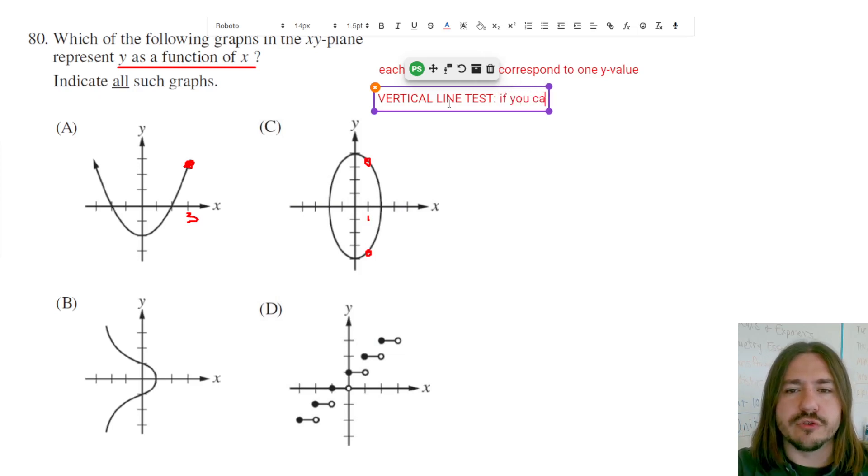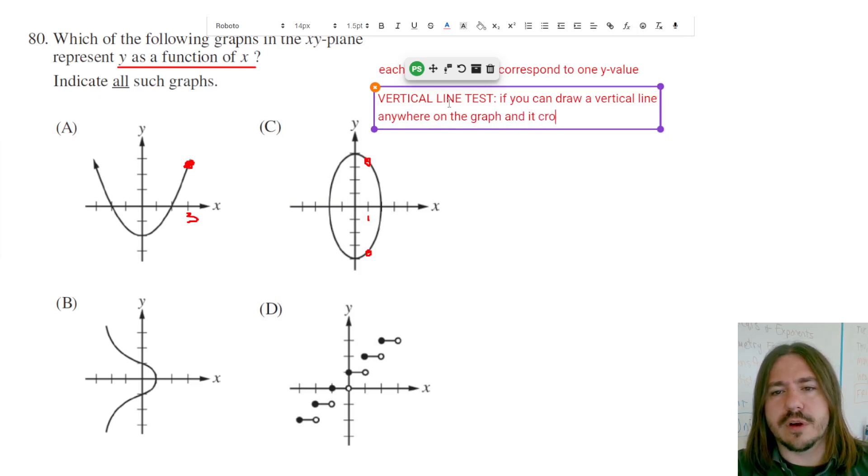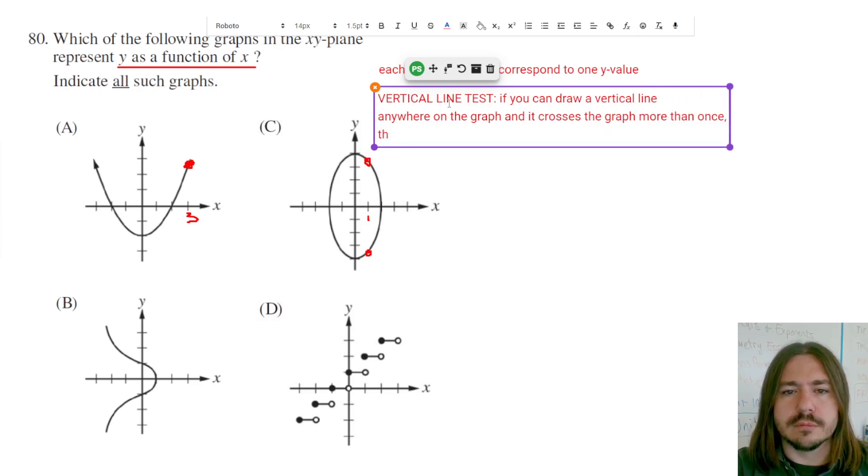And basically this is a test to see if y is a function of x. And the way it works is if you can draw a vertical line anywhere on the graph and it crosses the graph more than once, then y is not a function of x.